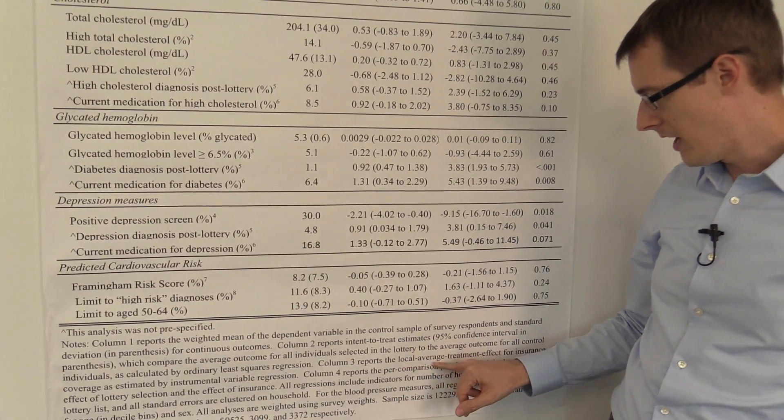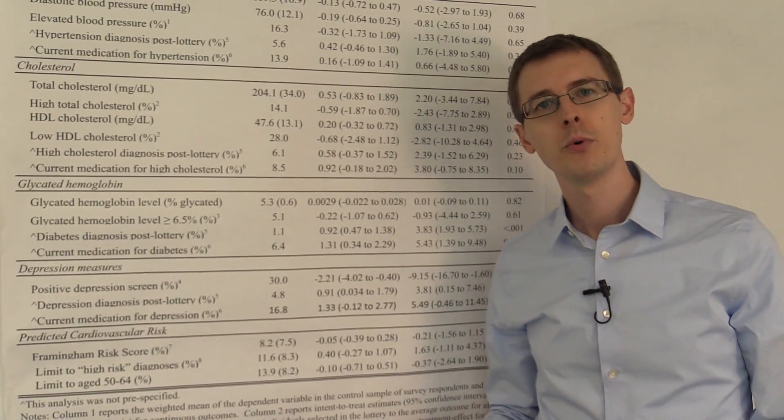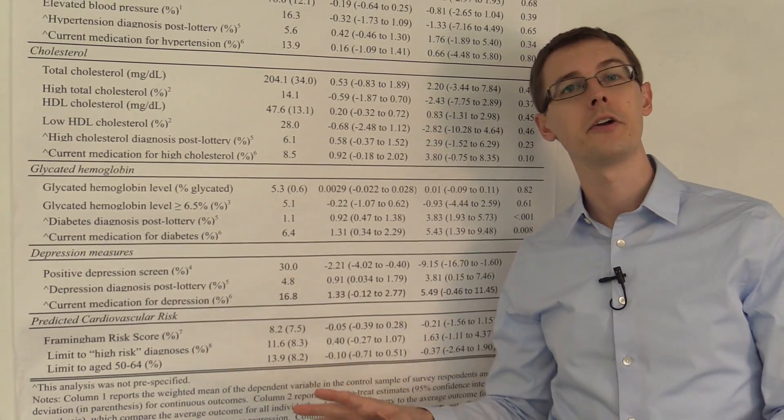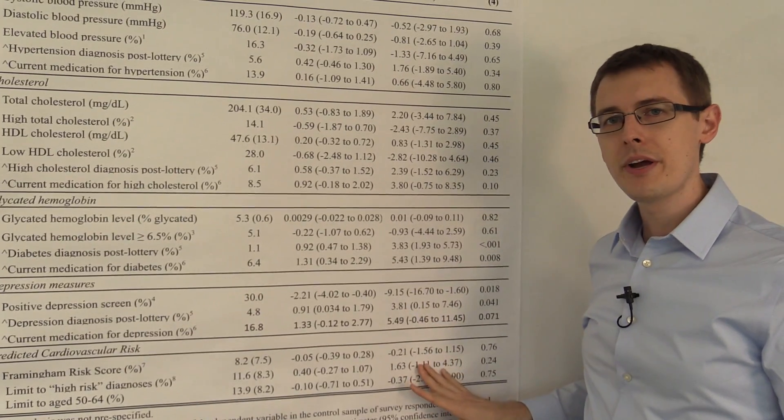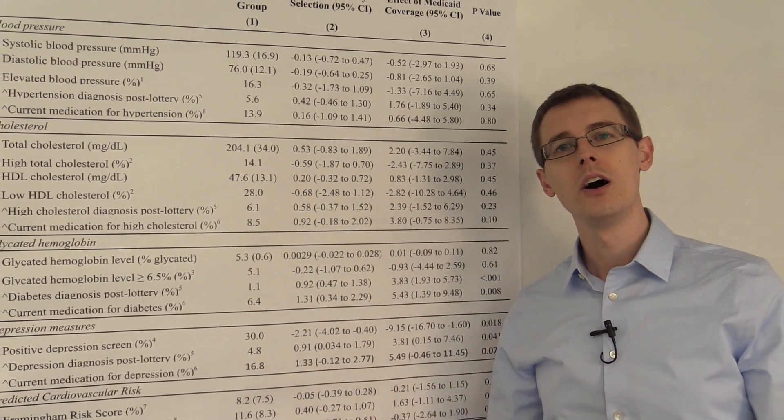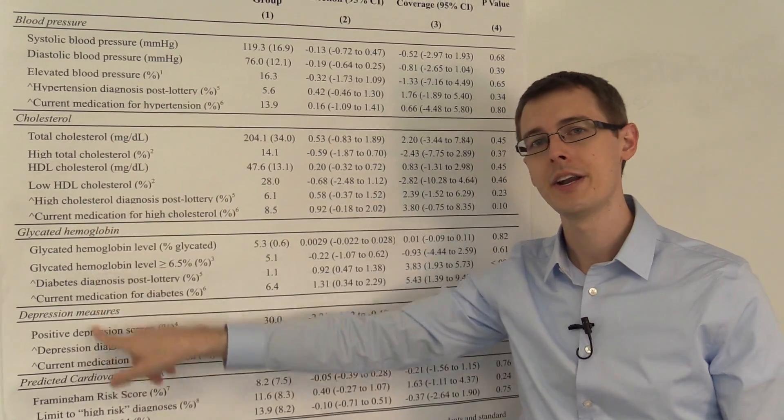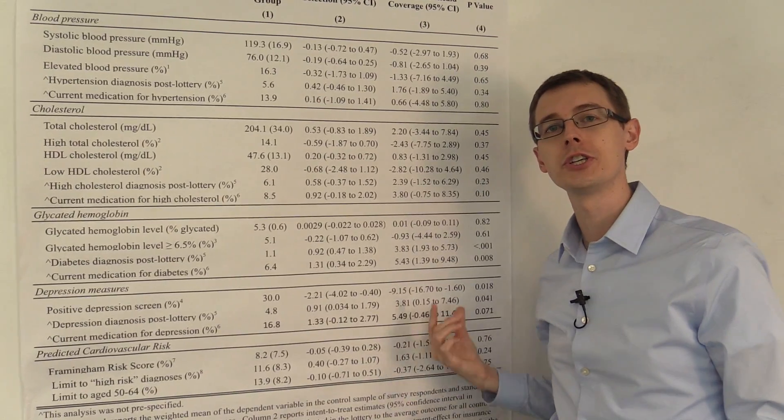Second, they say local average treatment effect. So they're getting some kind of average treatment effect. We'll talk about what exactly this local word means in a later module. So all of these numbers in column 3 are two-stage least squares estimates of the treatment effect of having Medicaid on different outcome variables, and they're computed using two-stage least squares.